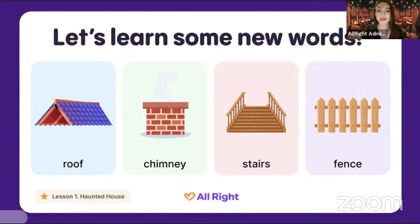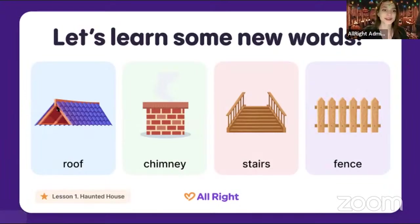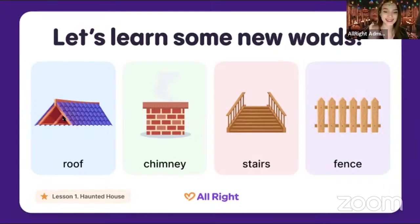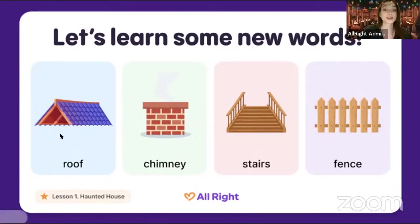I've got a question for you: what color is the roof in this picture? Can you write the answer and tell me? Blue — okay, thank you so much, Andrea. It's blue! So we can make the sentence: the roof is blue. And it's a triangle shape.